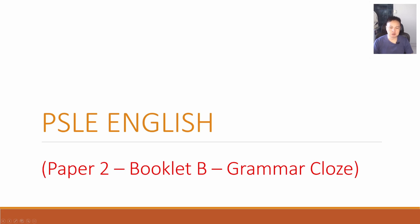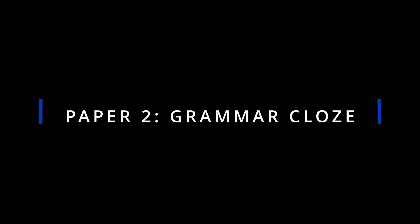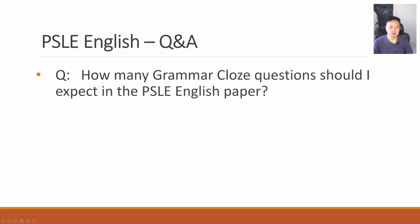Now let's move on to Booklet B, starting with grammar cloze. How many grammar cloze questions should I expect in the PSLE English paper? It's 10 questions with helping words — you choose from options A, B, C, D. Most of my students who are strong can get 8 out of 10 or even full marks for this section. It's not very difficult. What types of grammar concepts are commonly tested? All kinds of grammar topics are included, but mostly very common ones like pronouns, connectors, and prepositions. Students need to have a very strong foundation to do well.